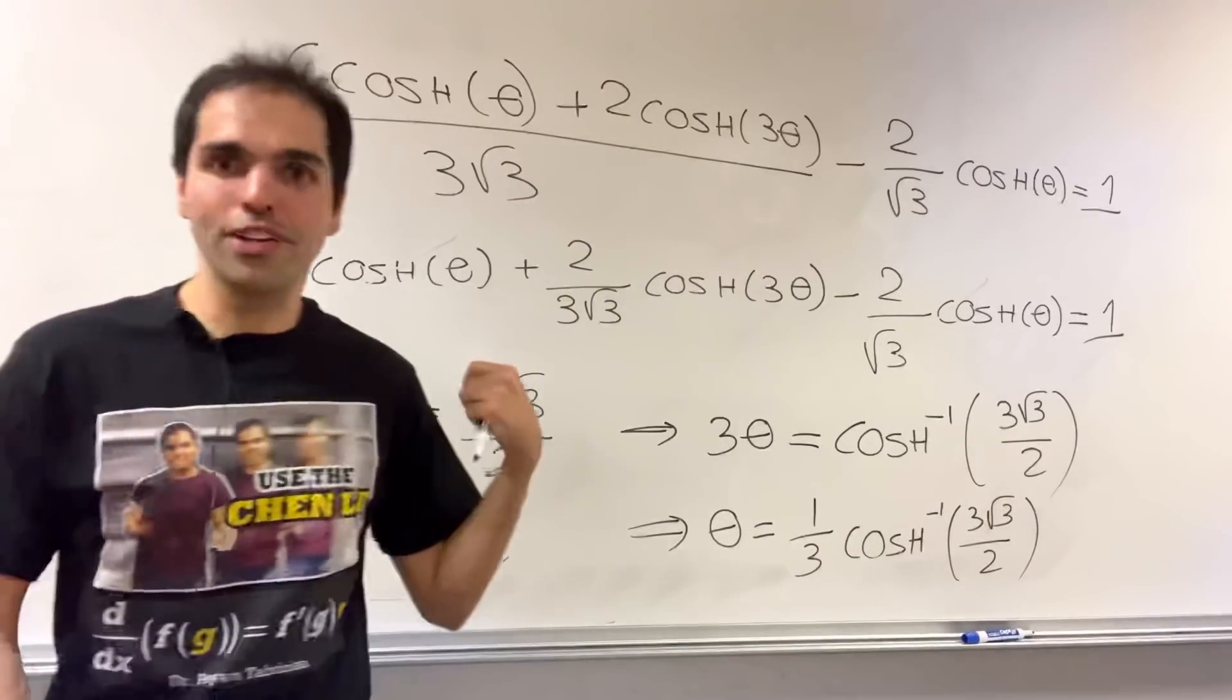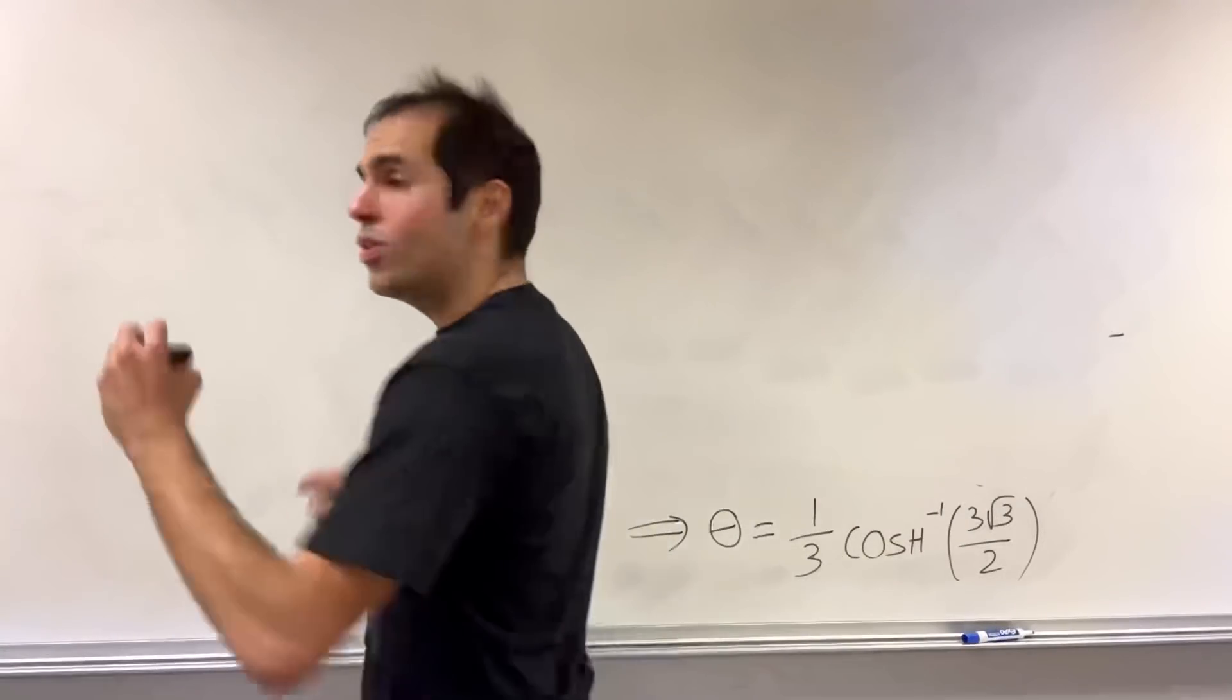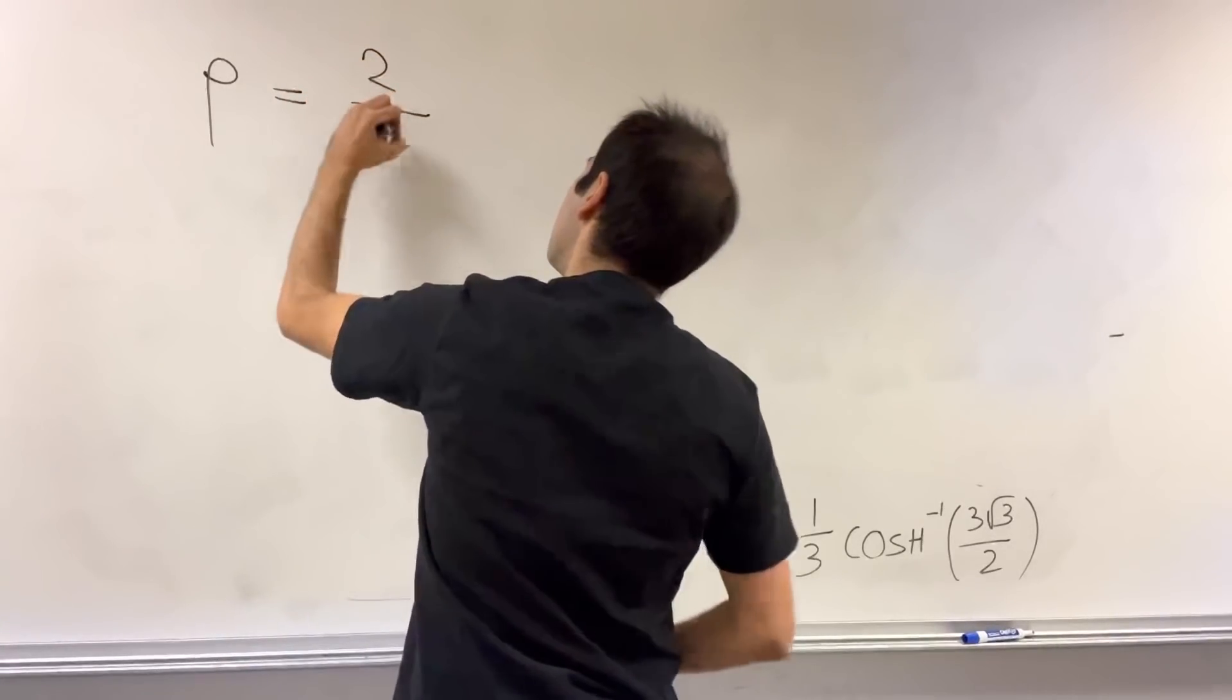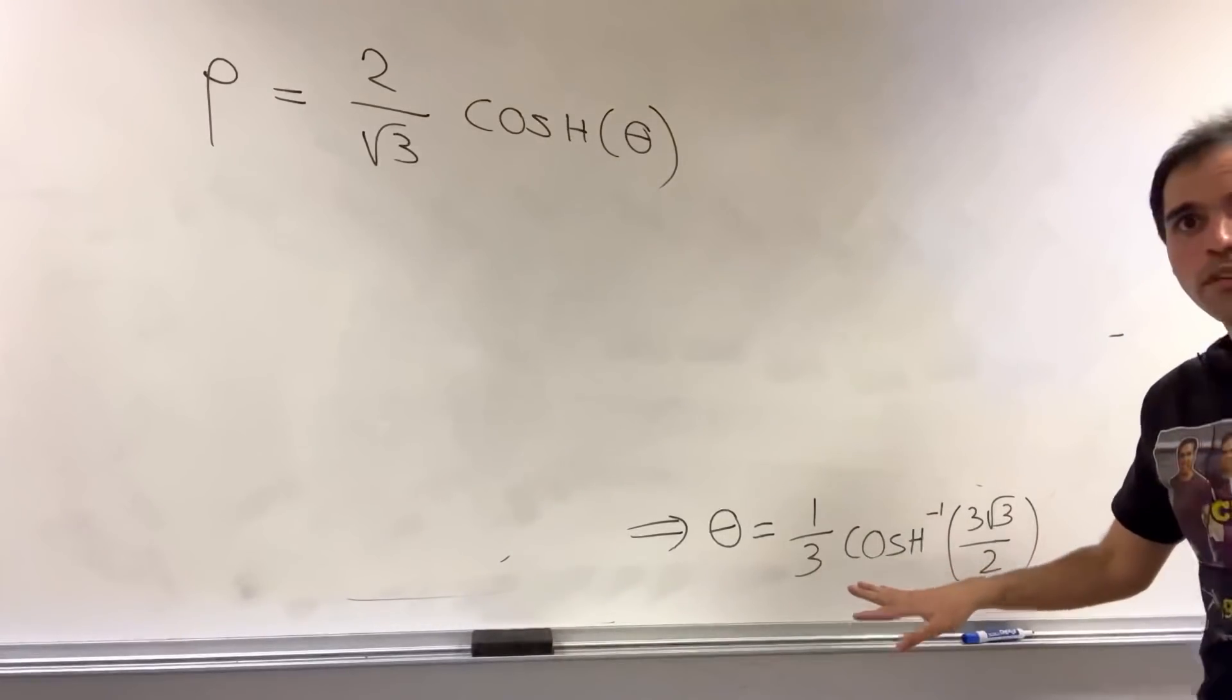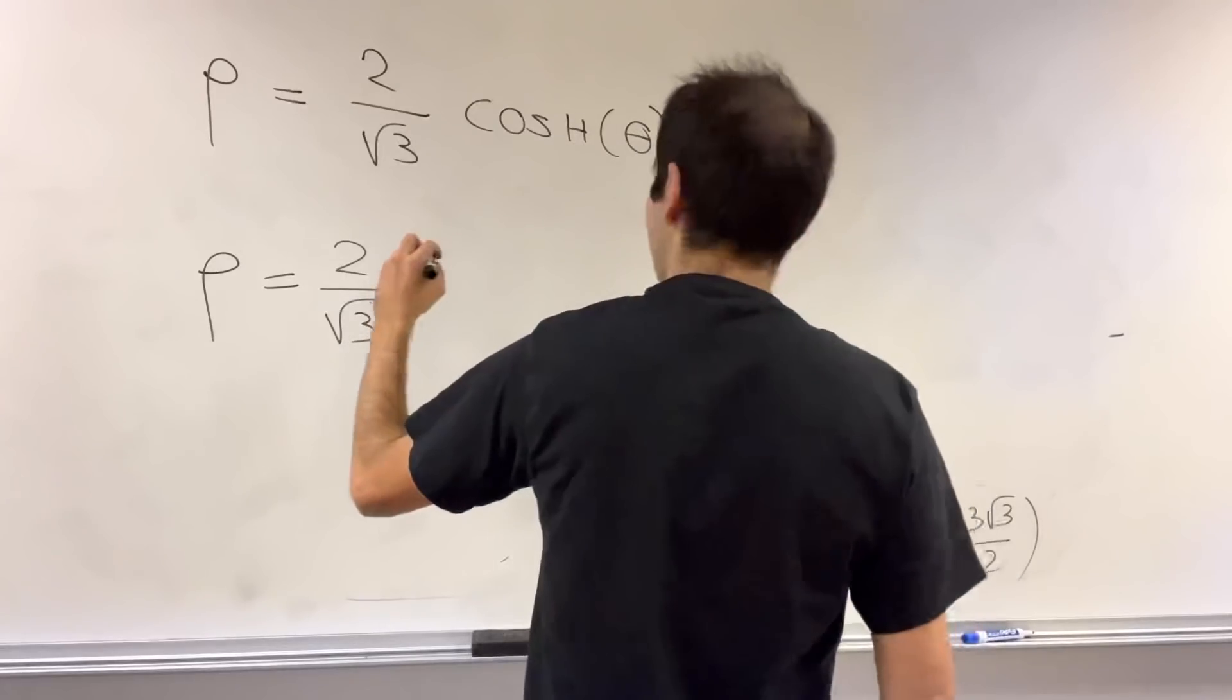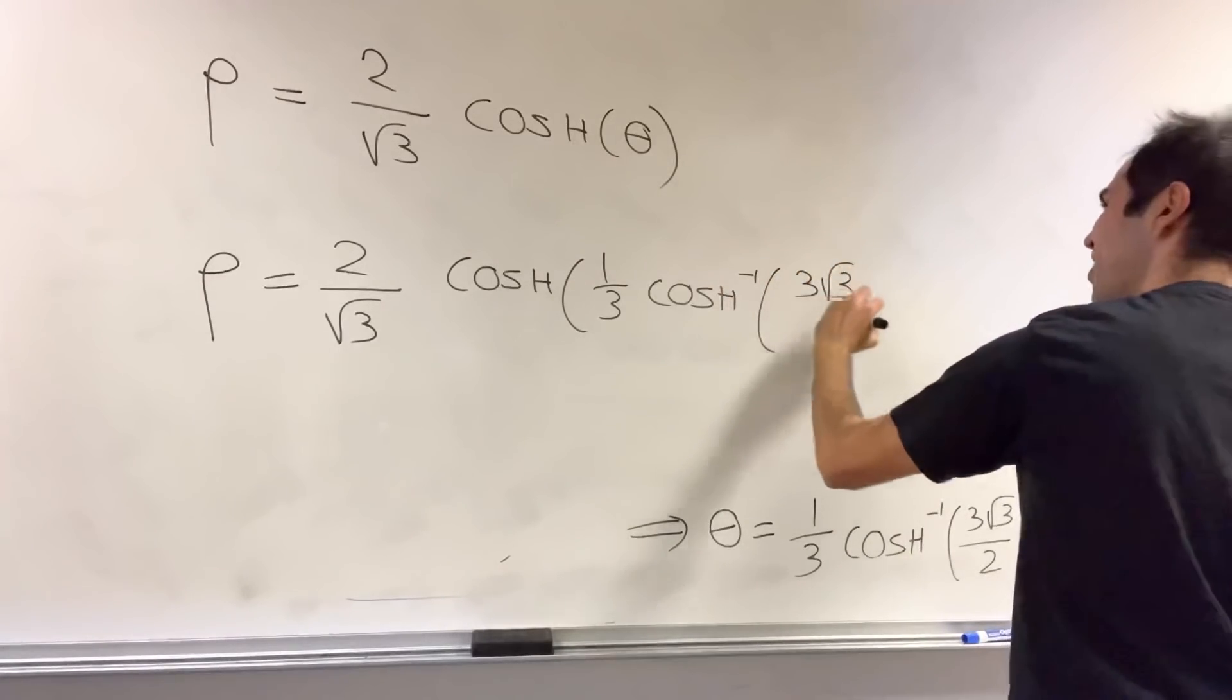But that's not what we want to solve for. We don't want to solve for theta, we want to solve for rho, but remember we do have this formula for rho, which was rho is two over square root of three, cosh of theta. But now remember we have our theta, so in the end we now have our explicit formula for rho. So it's two over square root of three cosh of one-third arc cosh of three square root of three over two.